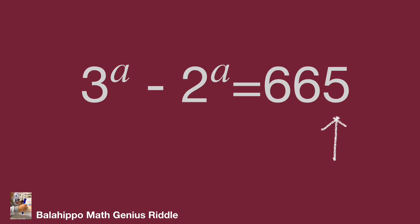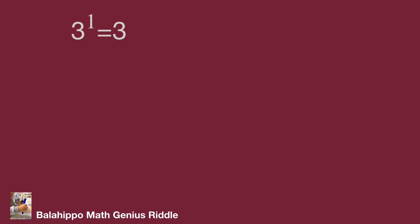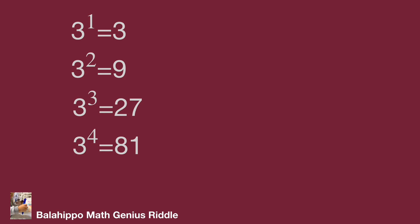Let's start from 3 power A. 3 power 1 equals 3, last digit is 3. 3 squared equals 9, last digit is 9. 3 cubed equals 27, last digit is 7. 3 power 4 is 81, last digit is 1. 3 power 5 is 243, last digit is 3. From this list we can find easily there is a cycle for the indices: the last digits are 3, 9, 7, 1, then 3, 9, 7, 1 — it's a cycle.